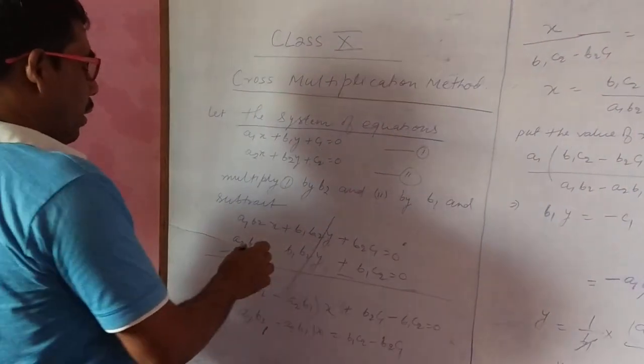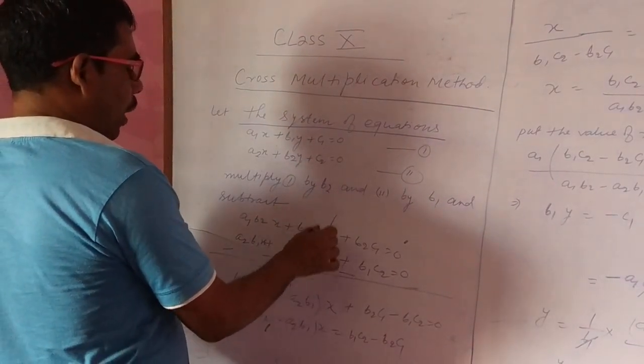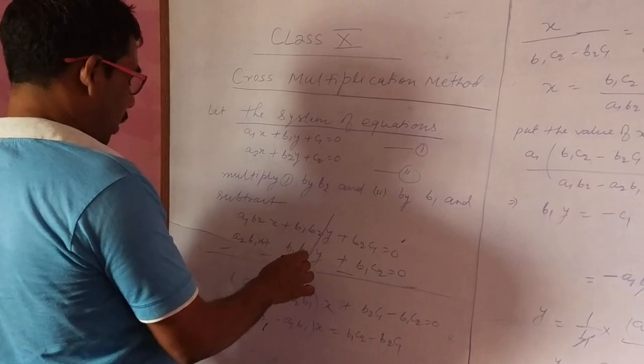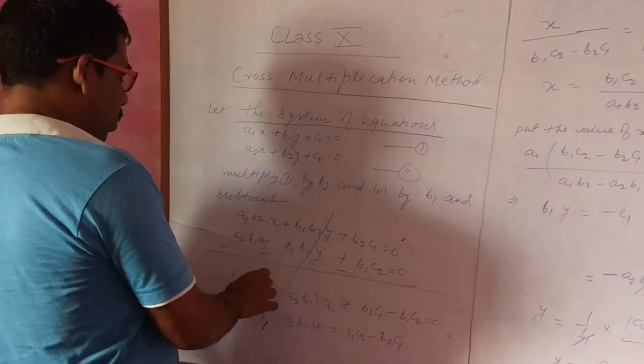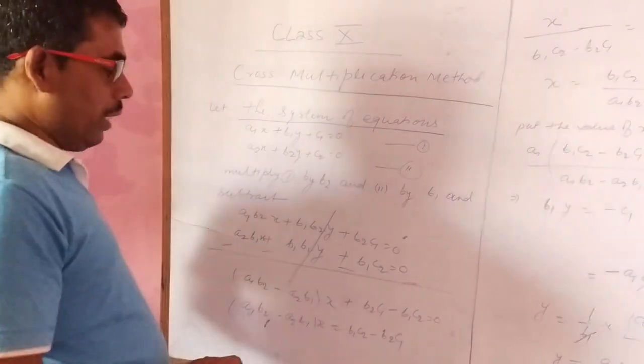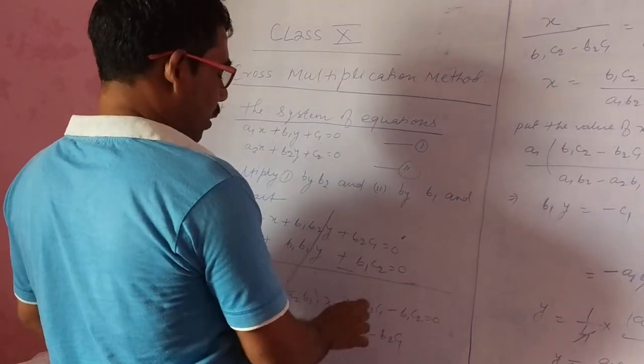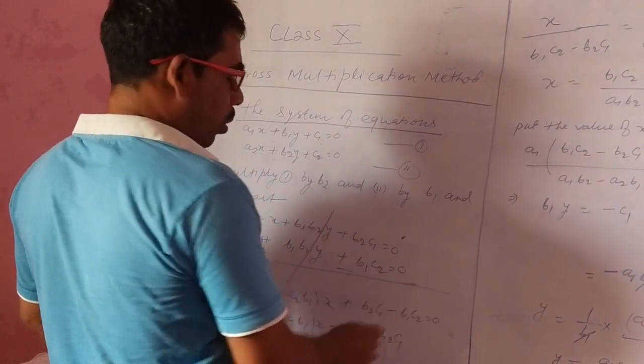After this, what we get? Here, plus sign, here minus sign. Therefore, both are like terms, so these are cancelled. Then we get a1b2 minus a2b1, x is taken as common, plus b2c1 minus b1c2 equal to 0.